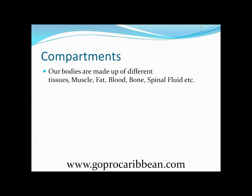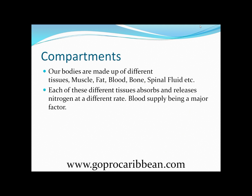Compartments. Our bodies are made up of many different tissues — muscle, fat, blood, bone, spinal fluid, our organs, our liver, and so on. All of these different tissues will absorb and release nitrogen at a different speed. Blood supply is the major factor in what speed a tissue might absorb or release nitrogen. Tissues with a very good blood supply will absorb gas fairly quickly, while tissues with a very poor blood supply will absorb and release gas at a slower rate.